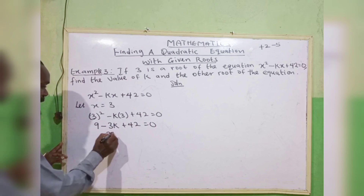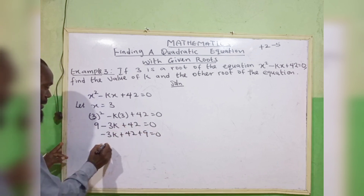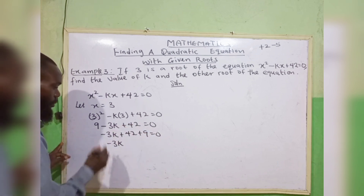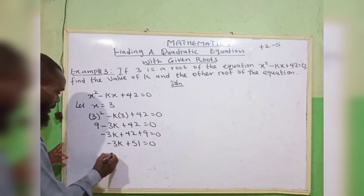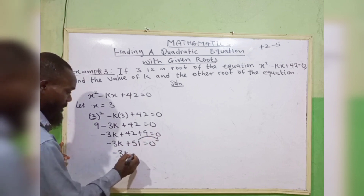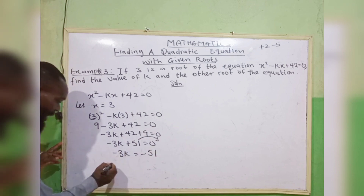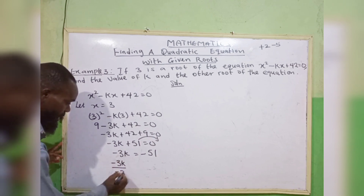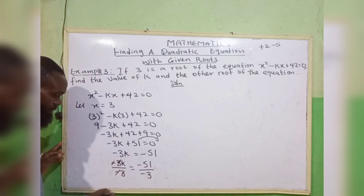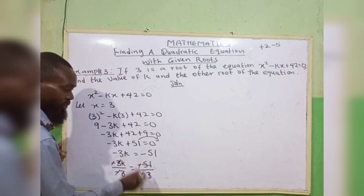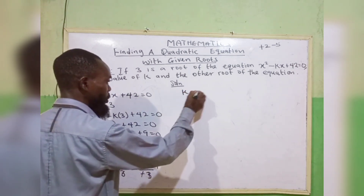Collecting like terms: minus 3k plus 42 plus 9 equals 0, so minus 3k plus 51 equals 0. Transposing: minus 3k equals minus 51. Dividing both sides by minus 3: k equals 17. The negatives cancel and 3 into 51 gives 17, so k equals 17.